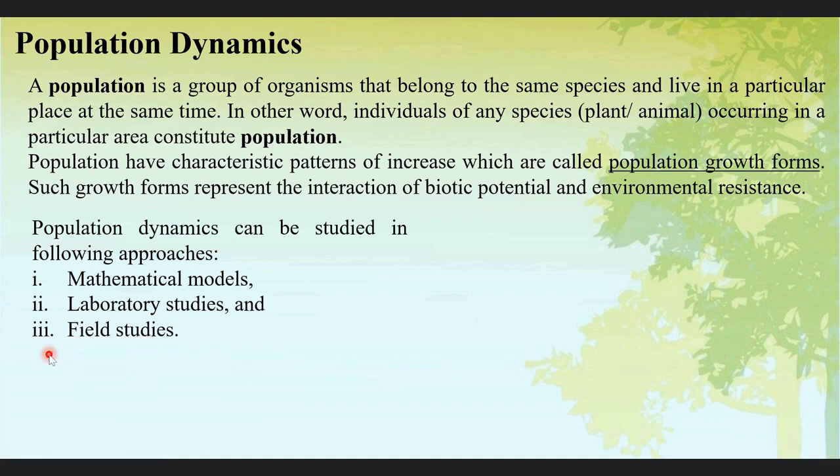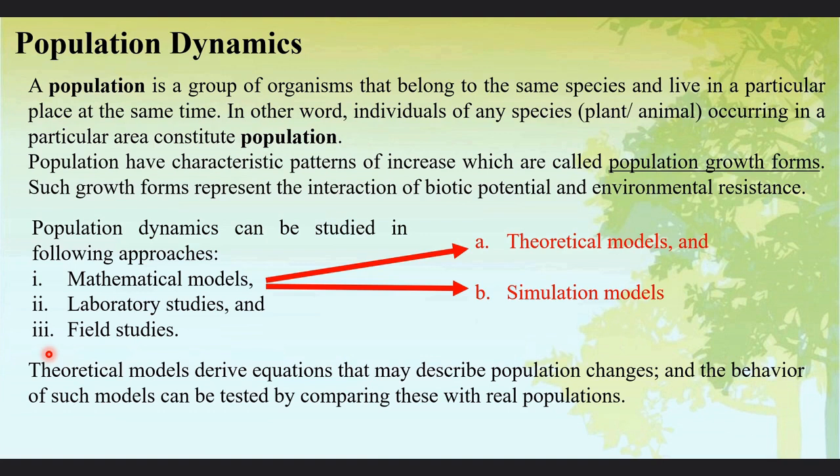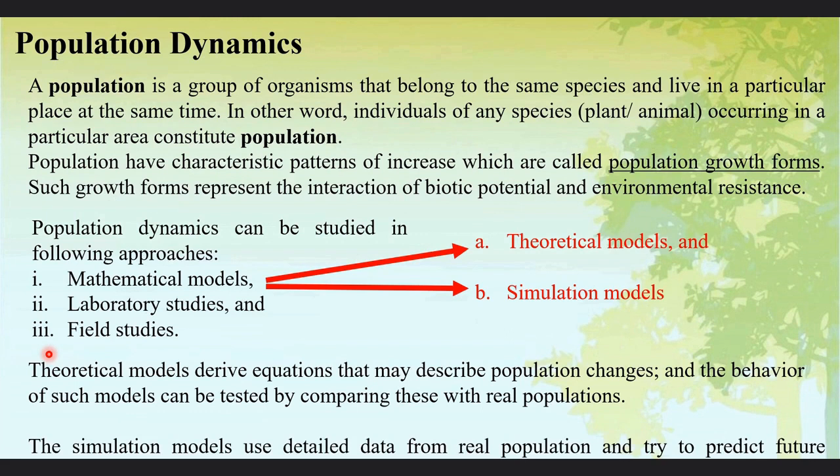Population dynamics can be studied in three approaches. Number one: mathematical models. Number two: laboratory studies, that is ex situ. And number three: field studies, that is in situ. Mathematical models are two types: theoretical models and simulation models. Theoretical models derive equations that may describe population changes and the behavior of such models can be tested by comparing these with real populations. Whereas simulation models use detailed data from real populations and try to predict future behavior of these populations under specific environmental conditions.